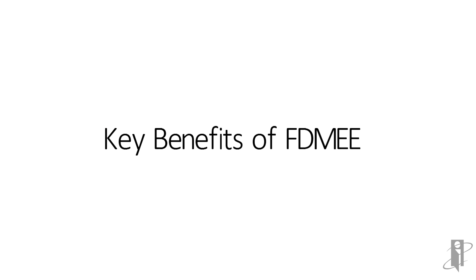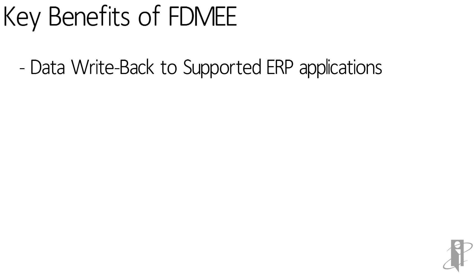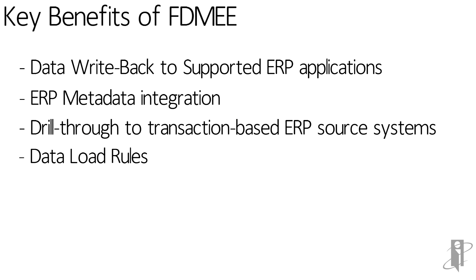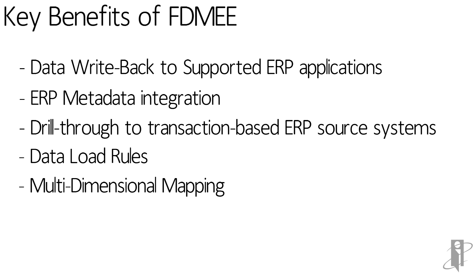What are some of the new key benefits of FDMEE? There is ERP metadata integration — not just data, but metadata. There are now data load rules. You can now do multi-dimensional mapping, which enables users to define mapping based on multiple source column values, allowing for loading data into dimensions not available in the target application. For example, you can map the account dimension based on the source value in the entity and product dimensions. There is also data writeback, where you define rules for how to extract planning budget data and write it back to the ERP system.